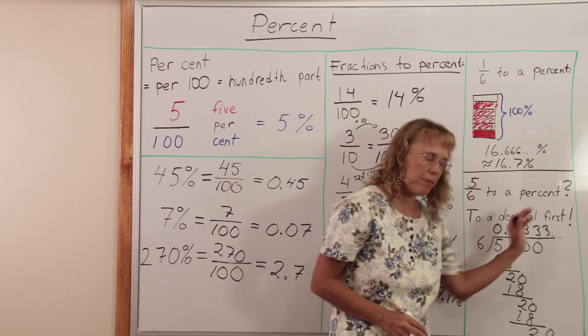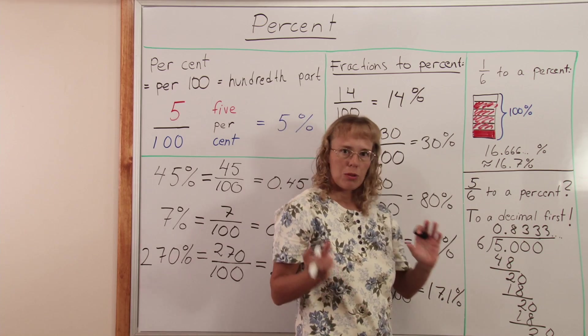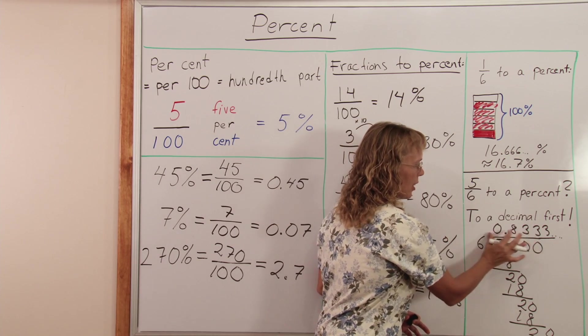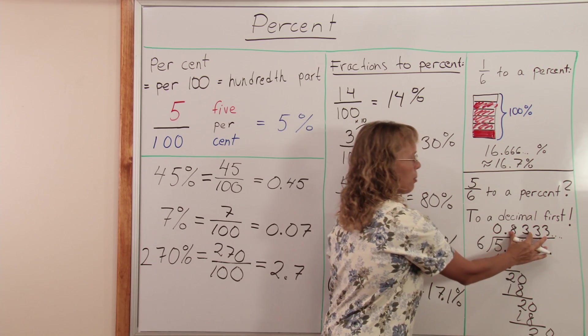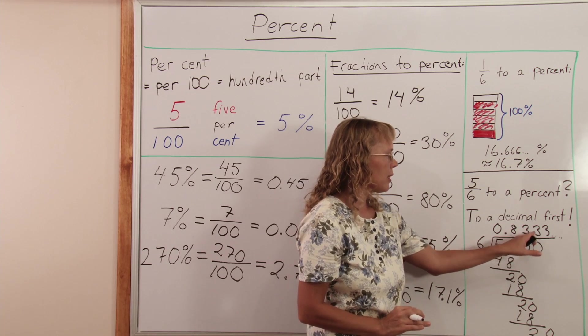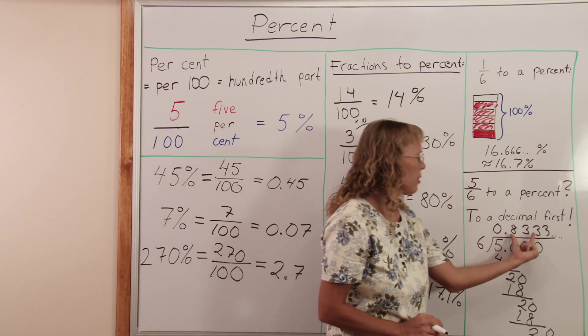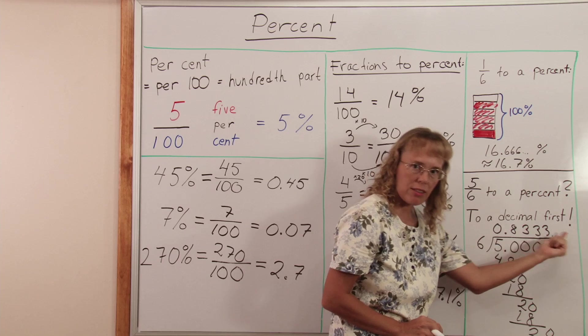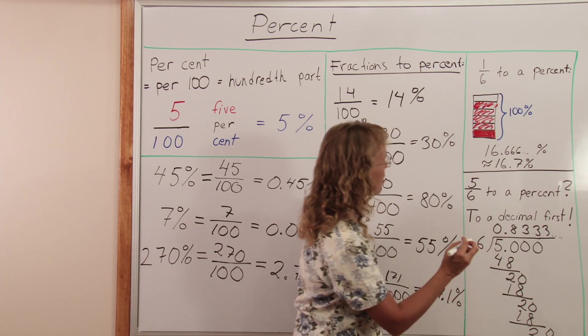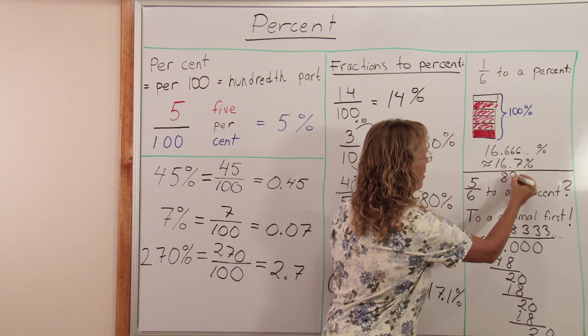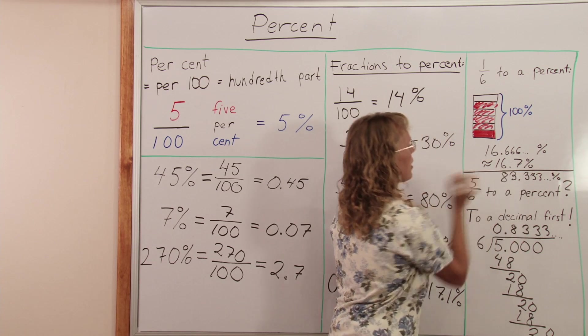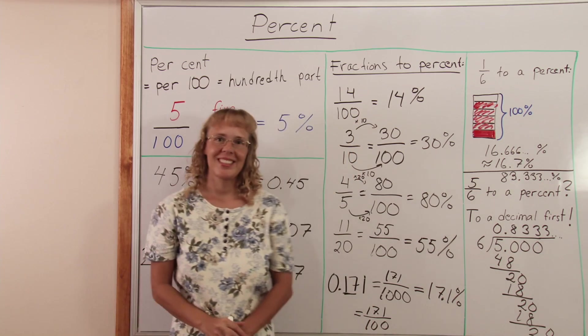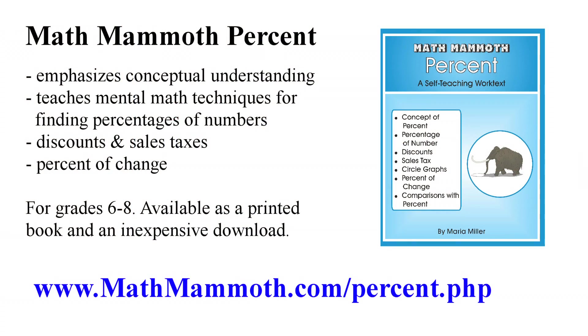Now I have it as a decimal. 0.83333. But to change it to a percent, remember that if it was 0.83, this 83 would be your hundredths and you would have 83 percent. But this one, since it continues with the 3's, it will be 83.3333 percent. I'm running out of space. I'm going to write it here. 83.333 percent is 5 sixths. Hope this helps. Thank you.